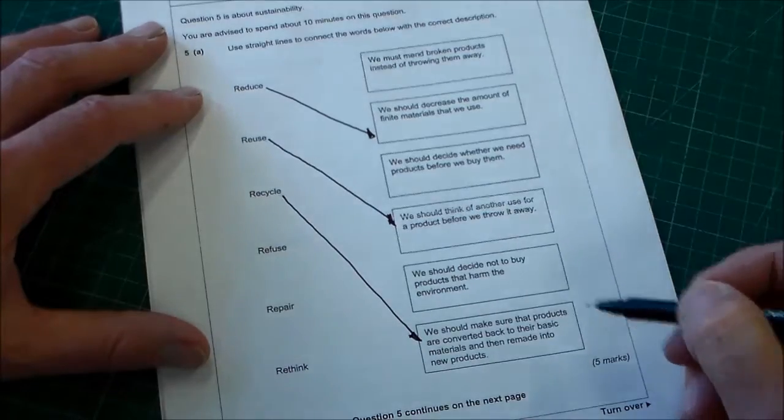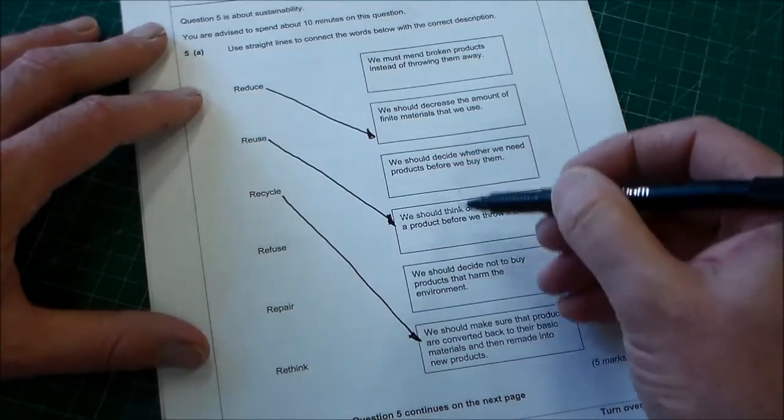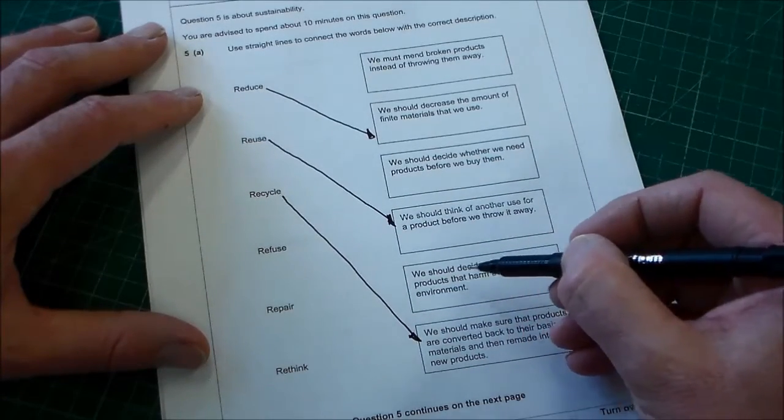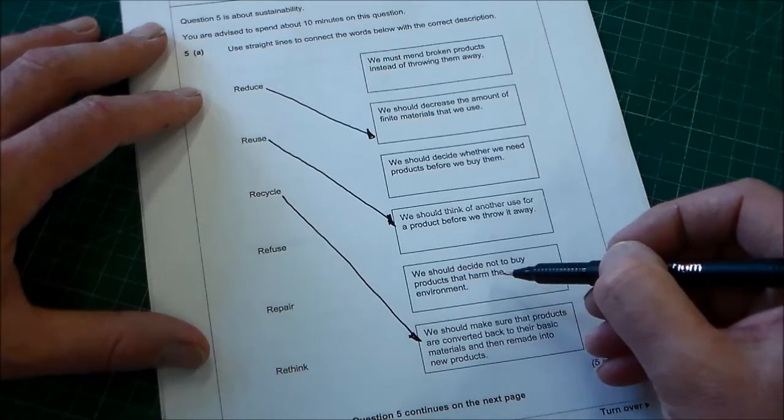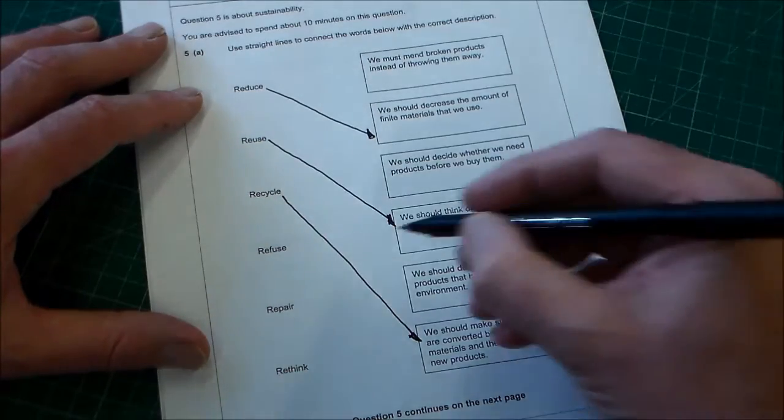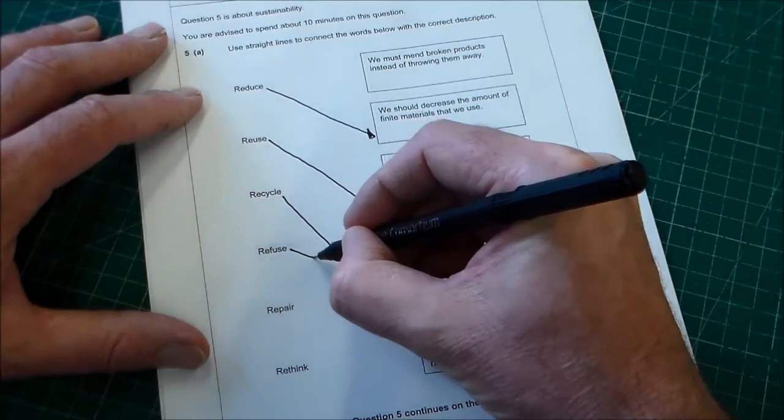The next one, refuse, and refuse is this one here. We should decide not to buy products that harm the environment. So we just go across here to refuse.